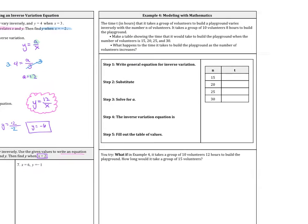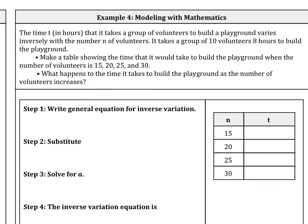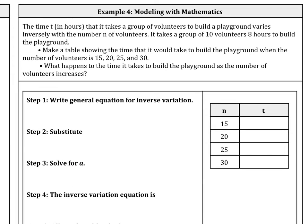So let's do an application of this. The time t in hours that it takes a group of volunteers to build a playground varies inversely with the number n of volunteers. It takes a group of 10 volunteers 8 hours to build the playground.